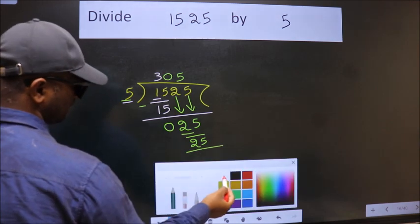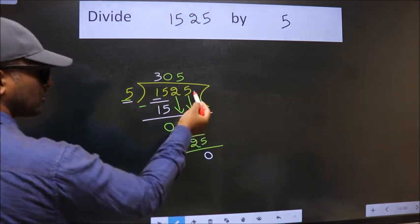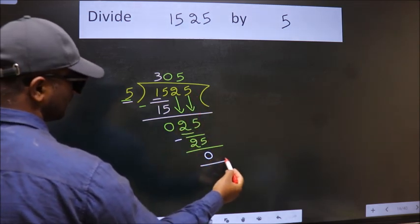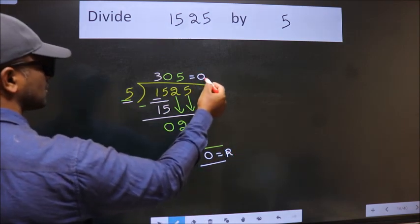Now we subtract. We get 0. No more numbers to bring down, so we stop here. This is our remainder, and this is our quotient.